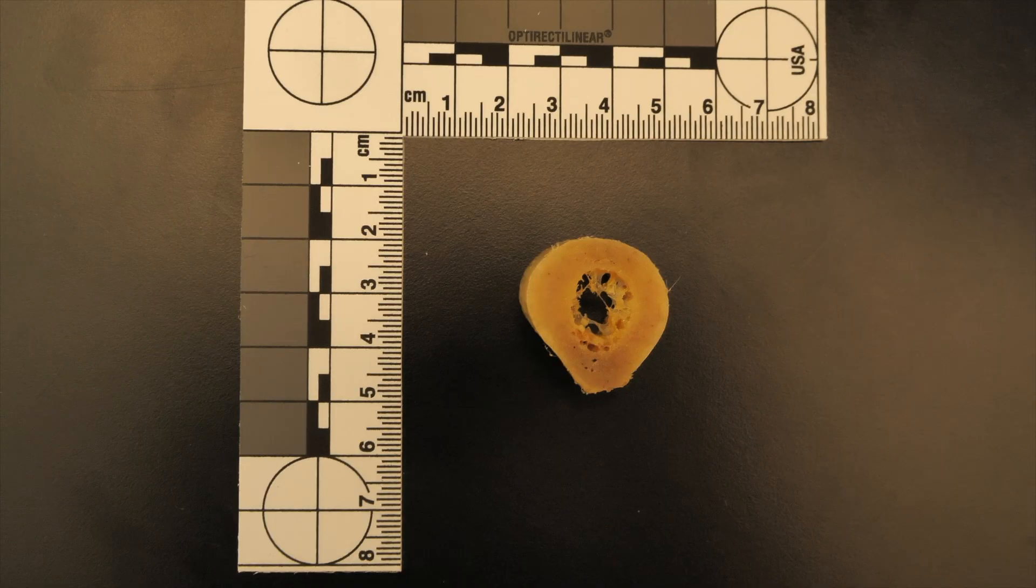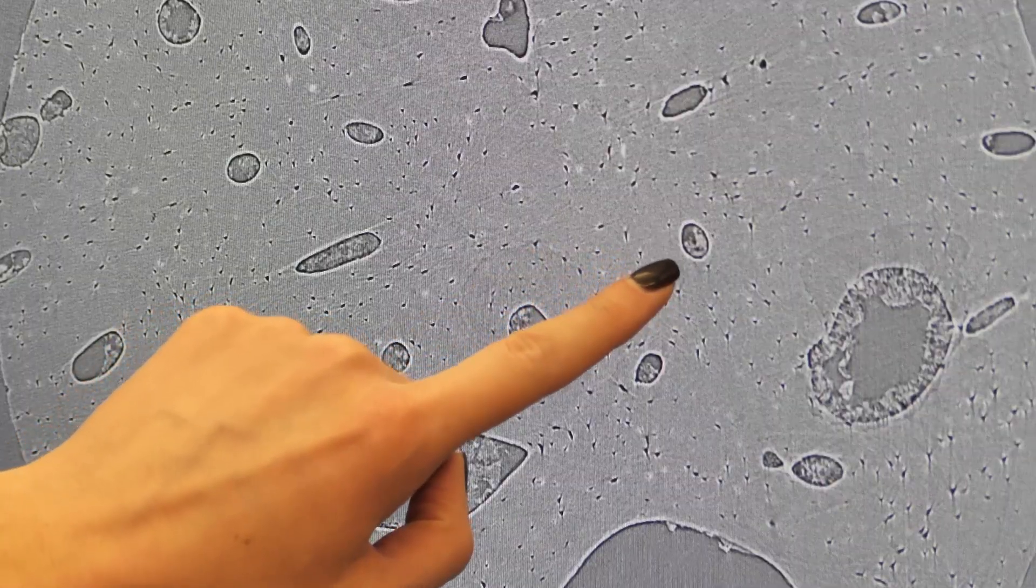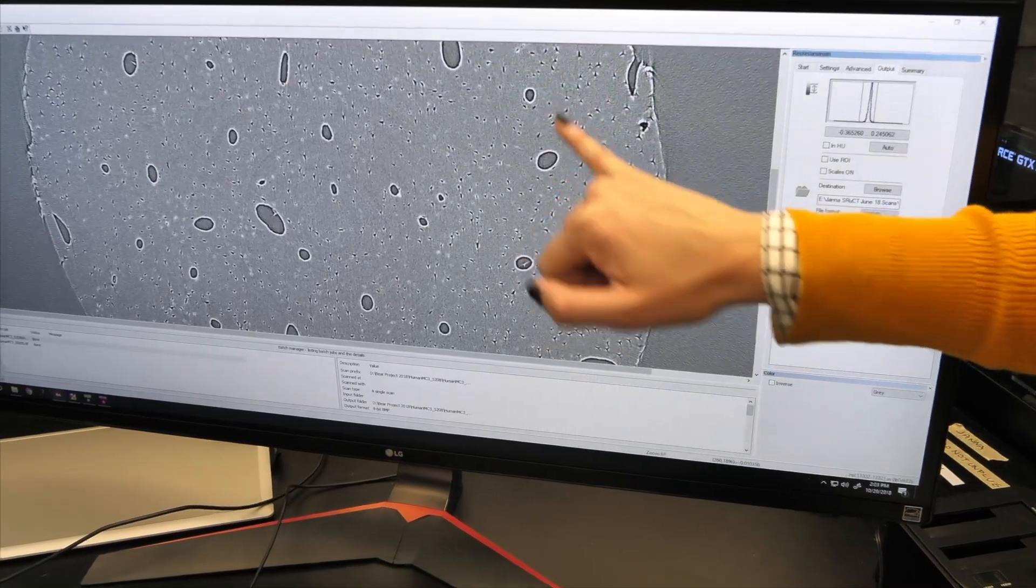This is one cross-section. With this, we can create a three-dimensional render of this sample. All these larger spaces here are the canals where you'll have blood or nerves, and all these smaller spaces are spaces where cells live.